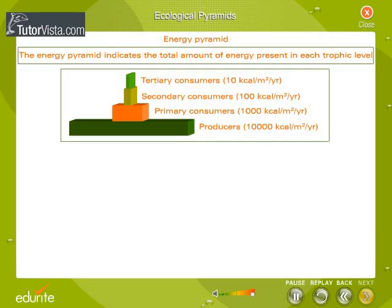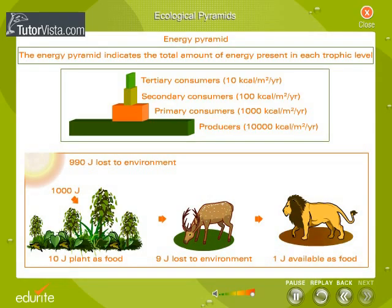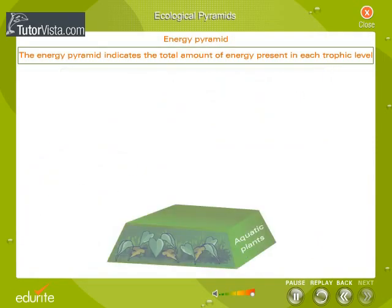The Pyramid of Energy: The energy pyramid indicates the total amount of energy present in each trophic level. It also shows the loss of energy from one trophic level to the next. An energy pyramid shows that the energy transfer from one trophic level to the next is accompanied by a decrease due to waste and the conversion of potential energy into kinetic energy and heat energy. As energy passes from producers to consumers, a lot of it is lost and the last trophic level receives much less energy.